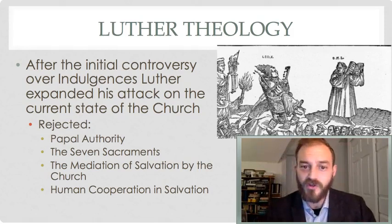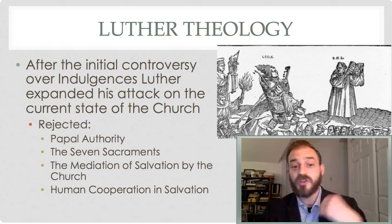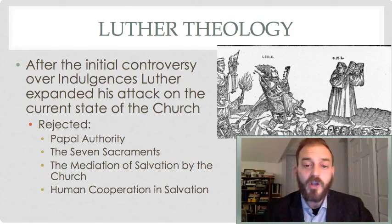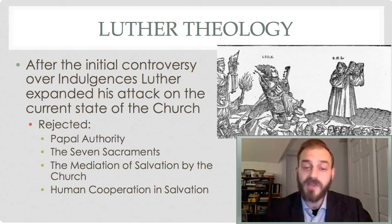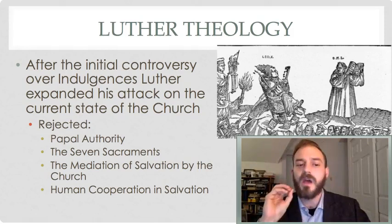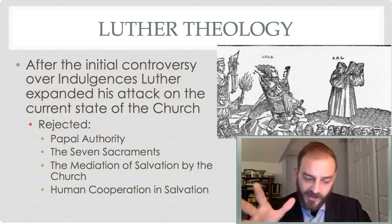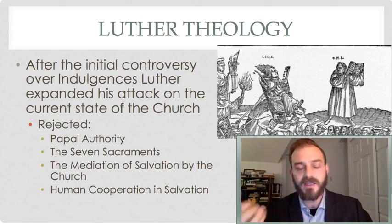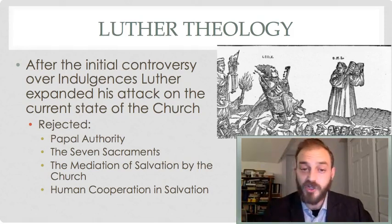After the initial controversy over indulgences, Luther expanded his attack on the current state of the church through various writings. He attacked papal authority more openly in a work called the Babylonian Captivity of the Church, calling the papacy a sham and ultimately the work of the Antichrist. He attacked the practice of the seven sacraments, arguing that there are only two — the Lord's Supper and baptism — and leaving confession as perhaps a half-sacrament, though it does not require a priest and does not affect the forgiveness of sins. So he rejected the entire economy of grace mediated by the medieval church.